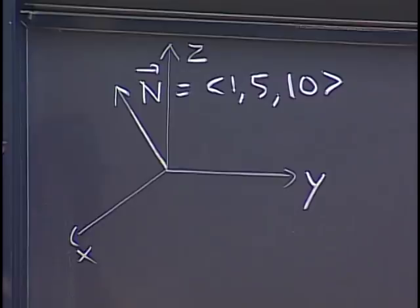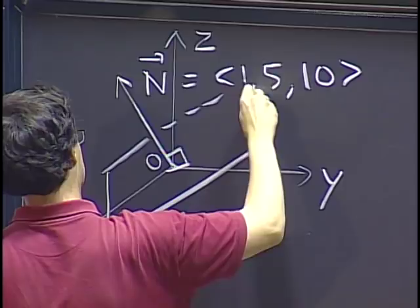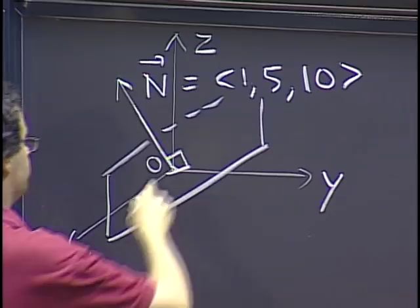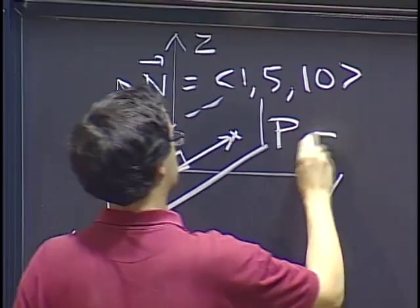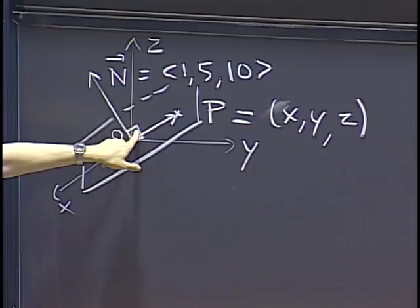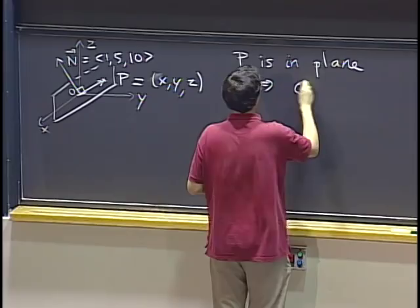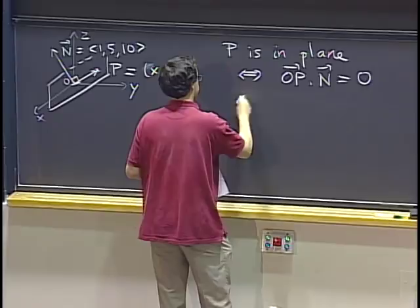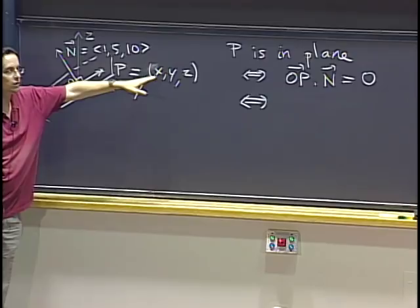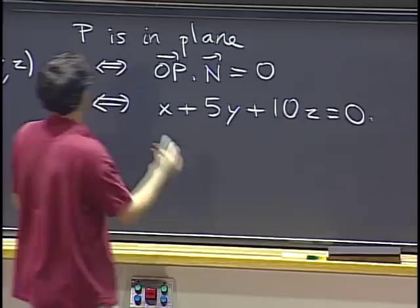We want to think of a plane that's perpendicular to this vector. When is a point in that plane? If we have a point P at coordinates x, y, z, the condition for P to be in the plane is that we have a right angle — that is, OP dot n equals zero. Writing that explicitly, vector OP has components x, y, z and n has components 1, 5, 10. So that gives us x plus 5y plus 10z equals zero. That's the equation of our plane.